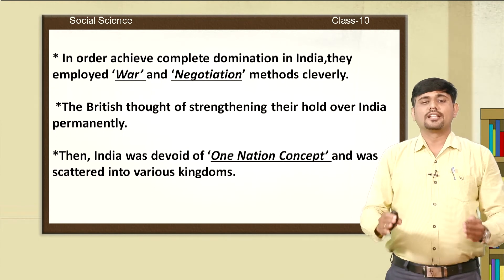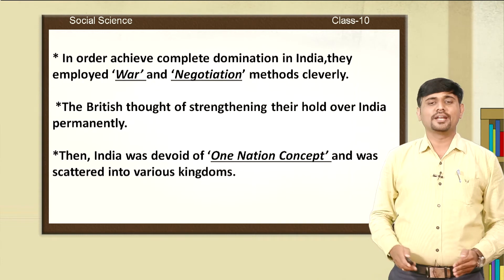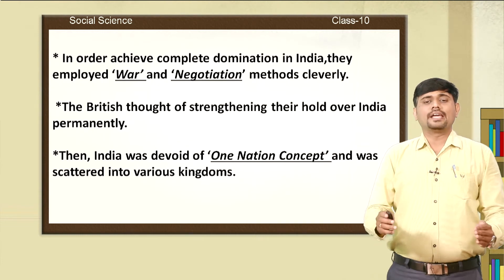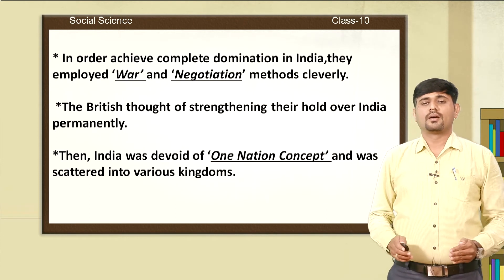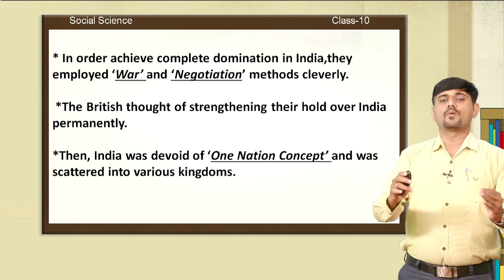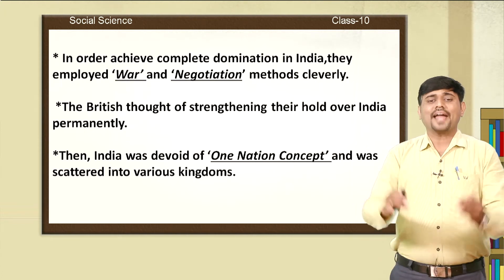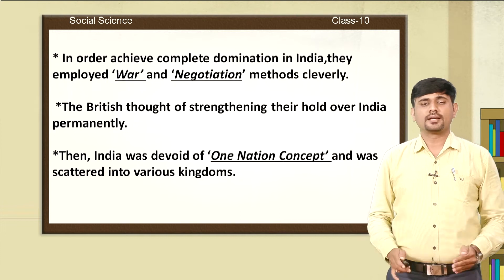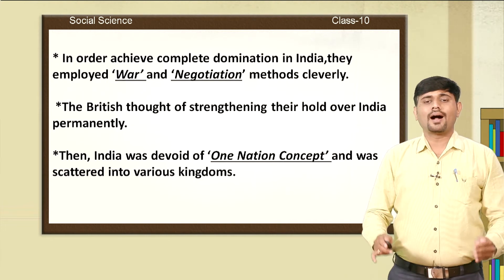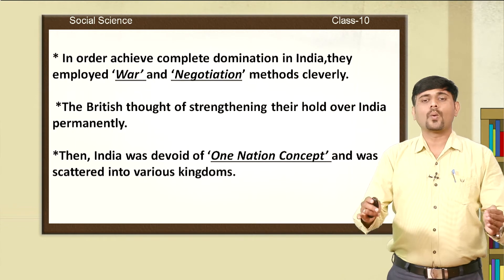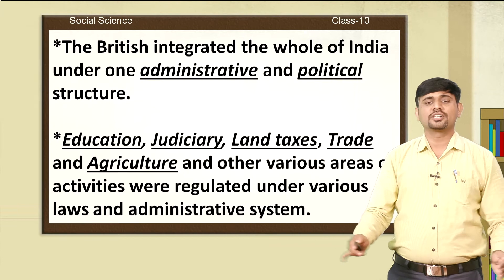The British thought of strengthening their hold over India permanently. By then, India was devoid of a one-nation concept — it was scattered into various kingdoms. The British decided to bring India under one political stream, one administration system, and one economic structure.